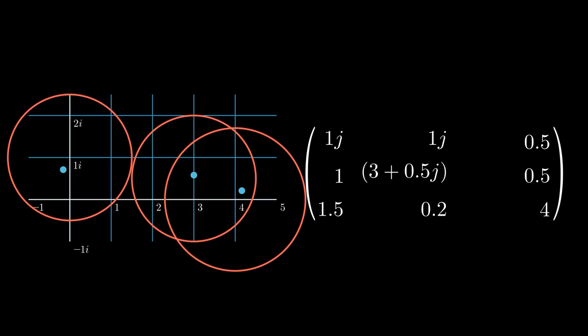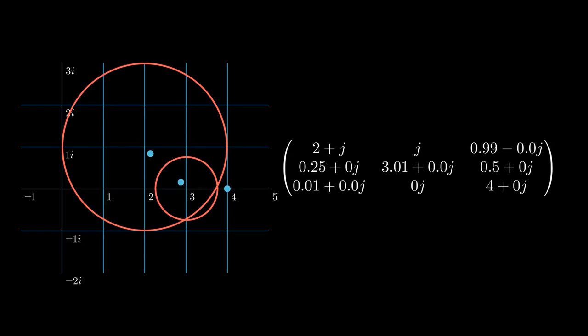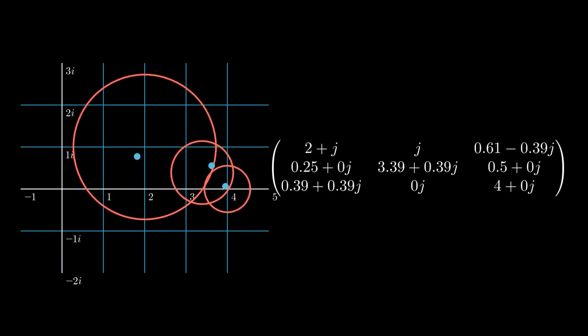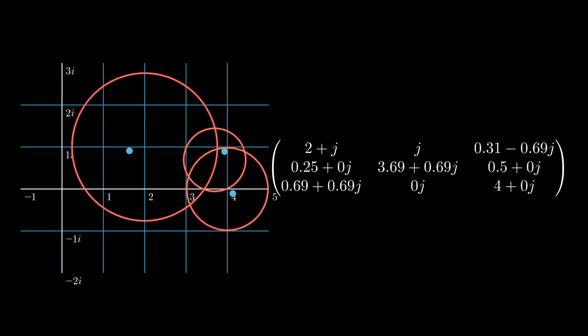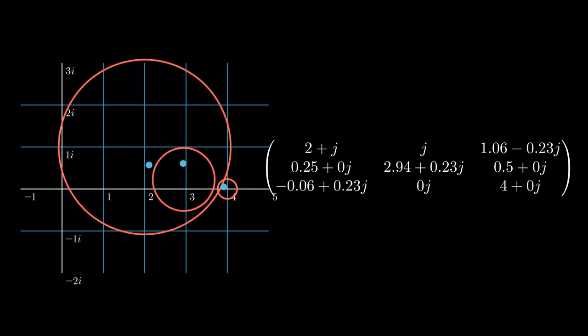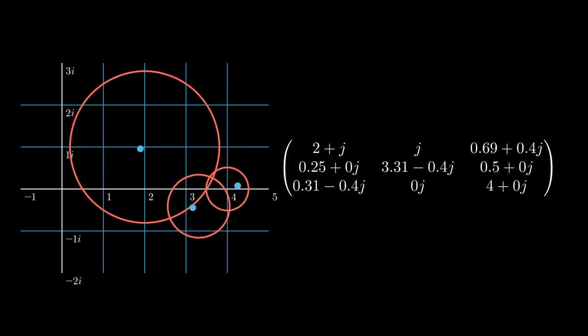So how about we let the matrix change continuously, and see if we can find anything new. Here the circles are the Gershgorin disks, and the blue dots are the eigenvalues.